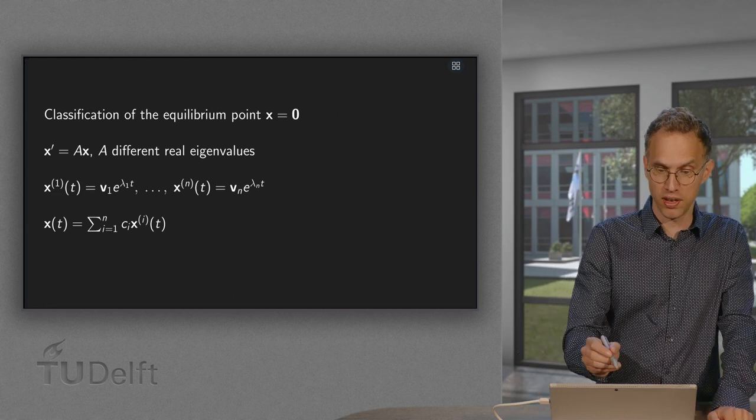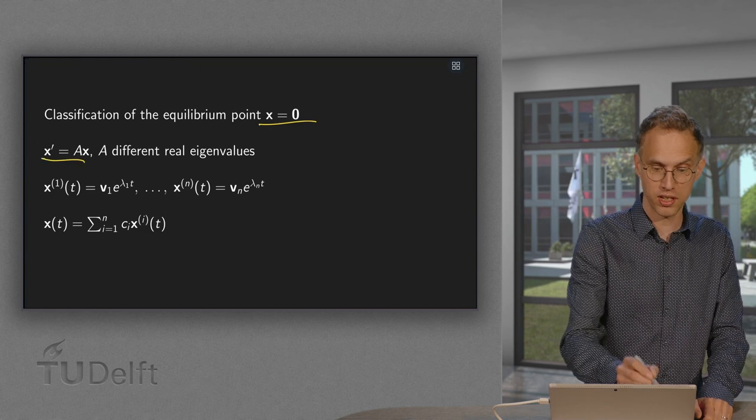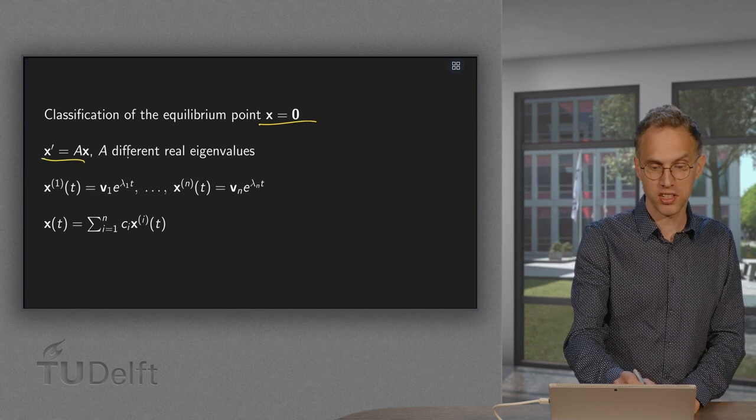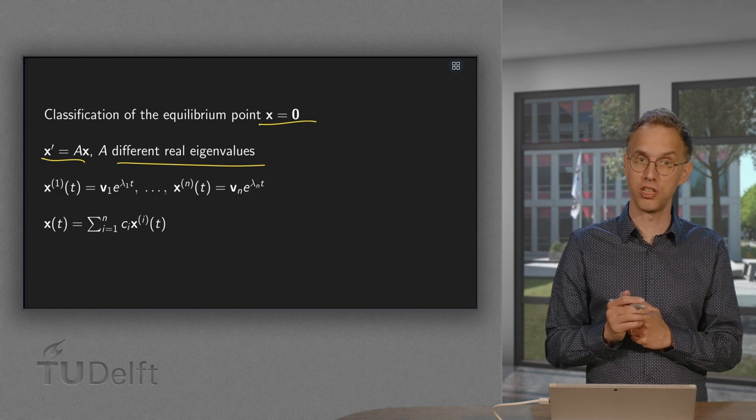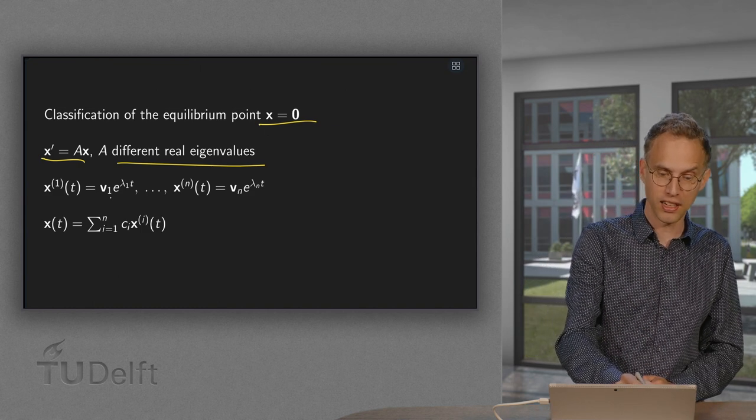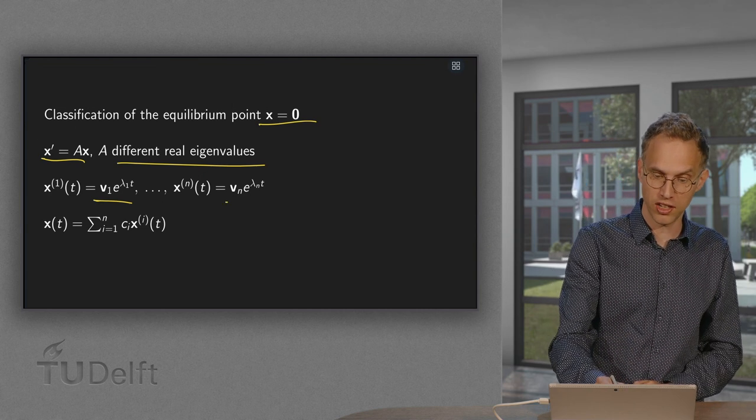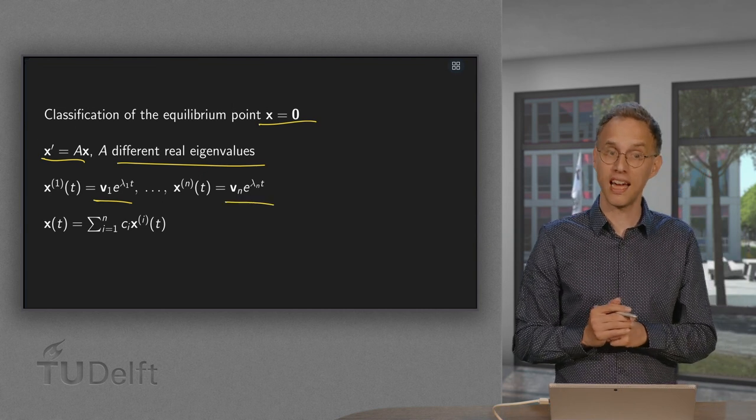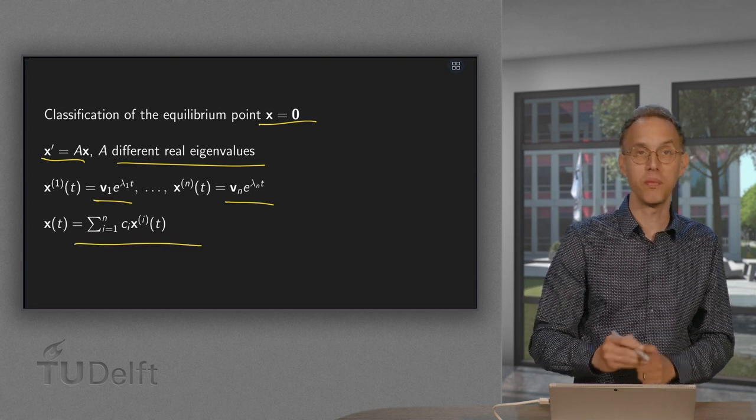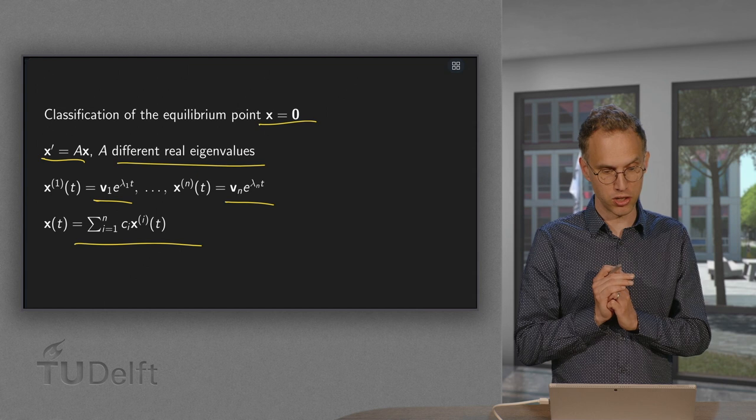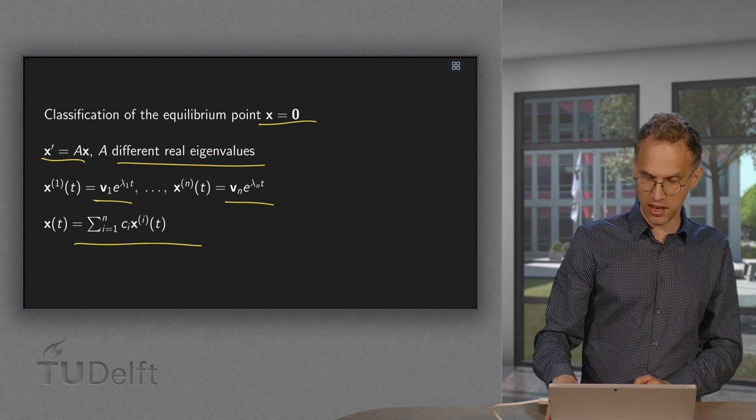So, we have some equilibrium point x at 0, we have x' equals A times x, matrix A with different and real eigenvalues, so we know what our solution looks like. And our total solution is some linear combination of those independent solutions. So that's the idea.